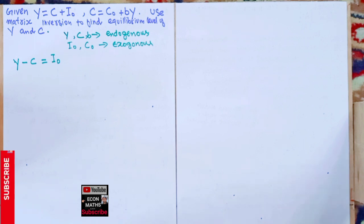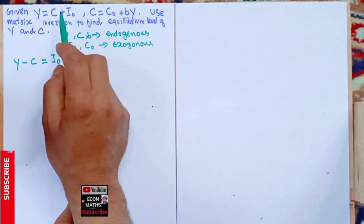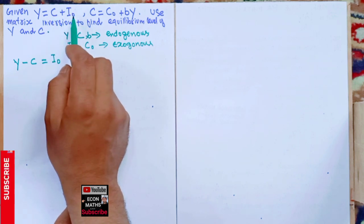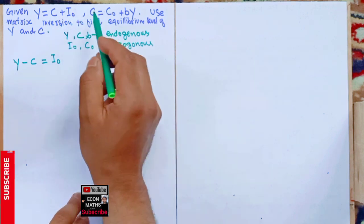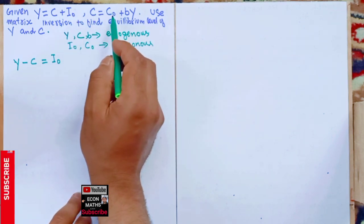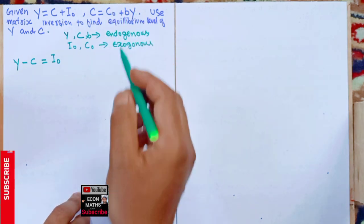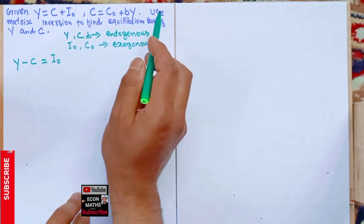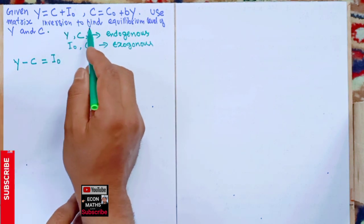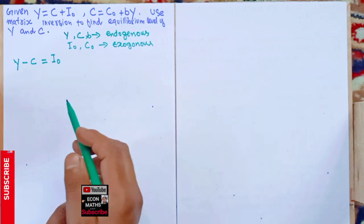The question is given: Y (income) is equal to C plus I₀, where C is consumption and I₀ is autonomous investment. C is equal to C₀ (autonomous consumption) plus bY, where b is the marginal propensity to consume and Y is disposable income. Use matrix inversion to find the equilibrium level of Y and C.